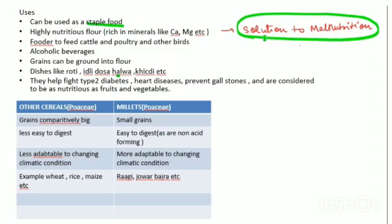Millets are also used as fodder to feed cattle and in poultry. The millet grains are used to feed other birds. They are used in the preparation of alcoholic beverages, in the production of flour, and in dishes like roti, idli, and dosa - for example, you must have heard about jawar roti.